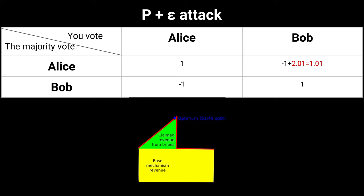The idea of the P+epsilon attack is that as an attacker we want Alice to win the dispute. If you vote Alice and the majority votes Alice, you get tokens for being coherent. But if you vote Bob, you lose some. As an attacker, we want to change the payoff matrix so that jurors are always better off or equal voting Alice.